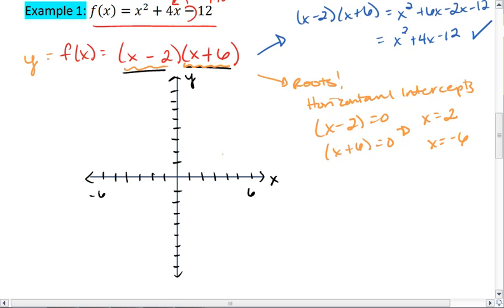So we end up with the ordered pairs, 2, 0, and negative 6, 0.